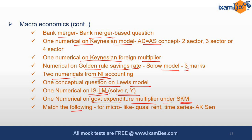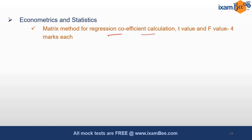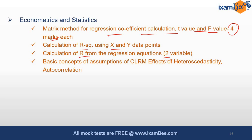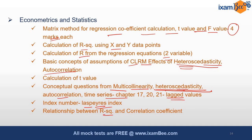In econometrics and statistics, matching questions on macro topics like Cauchy-Rent and time series. Matrix methods for regression coefficient calculation, T-value and F-value — four marks each. Calculation of R-squared using X and Y data points, calculation of R from regression questions, two-variable case, basic concepts and assumptions of CLRM, effects of heteroscedasticity and autocorrelation, calculation of T-value, conceptual questions from multicollinearity, heteroscedasticity, autocorrelation, time series — calculating lagged values, index numbers, Laspeyres index, and the relationship between R-squared and correlation coefficient.